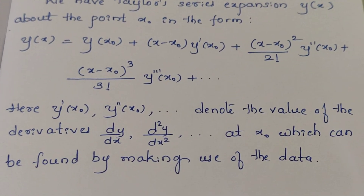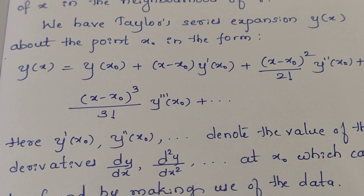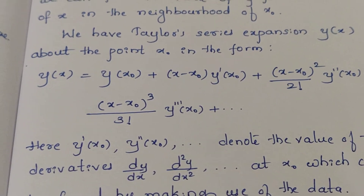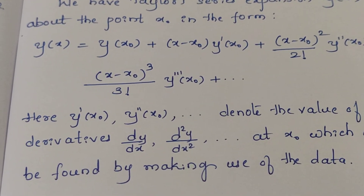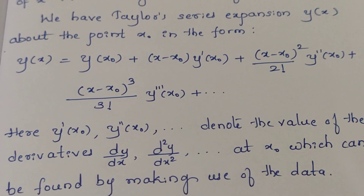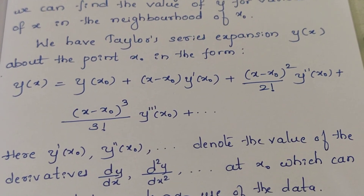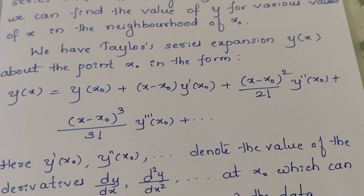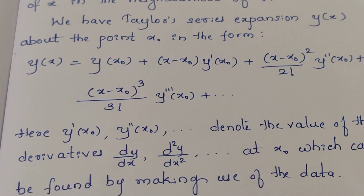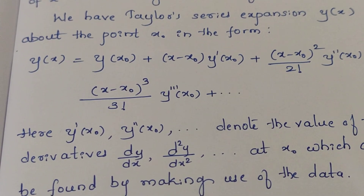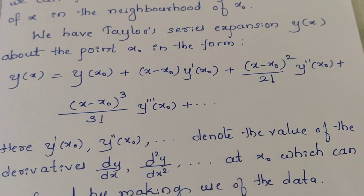These derivatives can be found by making use of the given data. In the solved problems, you are given the differential equation with an initial value. Using the differential equation, dy/dx gives you y'(x0) at x0. Then differentiate to find y'', y''', and so on, up to however many terms are needed — for example, up to the fourth or fifth term, or up to a specified degree. Substitute the values of x0 and the computed derivatives into the Taylor expansion to get the solution.